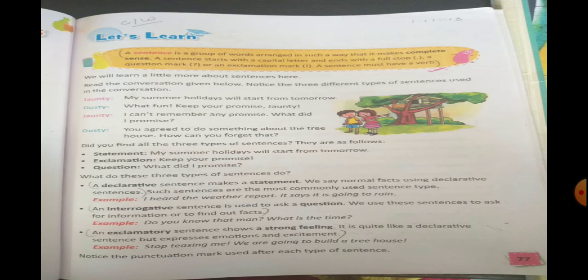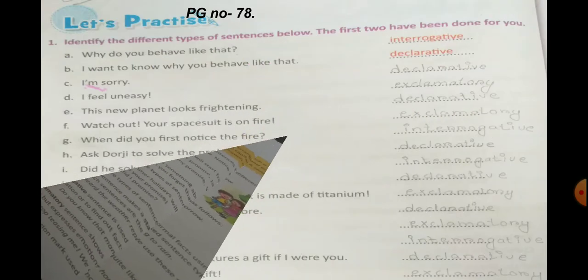Now let's move to the next page, that is page number 78, and let's start with the exercises. I hope the concepts of types of sentences and what is a sentence are clear to you. So now we will start with the exercises. We have to identify the different types of sentences given below. The first two have been done for us.